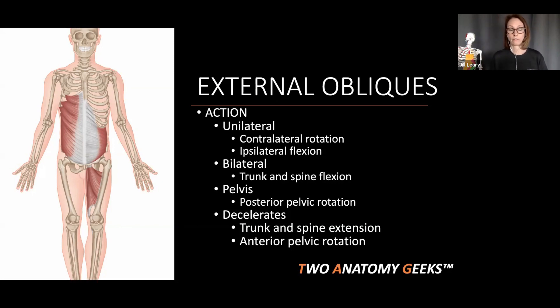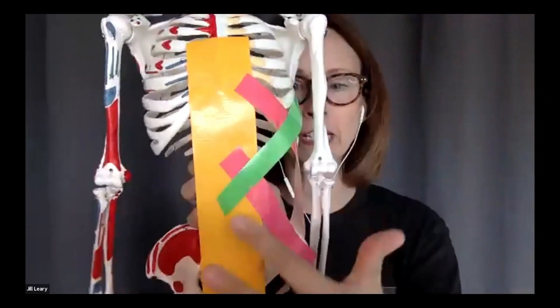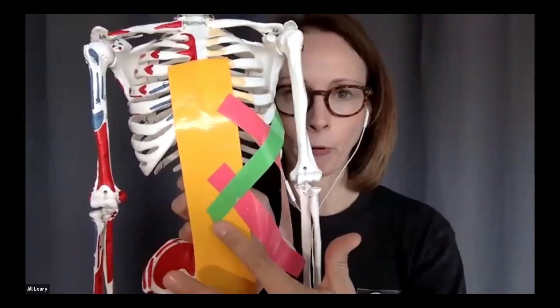Your left external oblique will rotate you to the right. I'll give you a good mnemonic for that as we look at George in a bit. Bilaterally, the external obliques can also create a posterior pelvic rotation because they're located more on the front of that bowl or pelvis. So we're going to start the demonstration with the external oblique represented by the green tape.